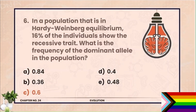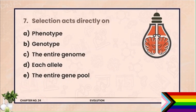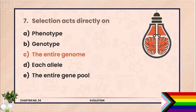MCQ 7. Selection acts directly on — options: phenotype, genotype, the entire genome, HLE, the entire gene pool. The correct answer is the entire genome. Kyun ki entire genome ke upar overall selection jo hai wo act kar rahi hoti hai. Selection kisi ek single chiz pe act nahi karta.